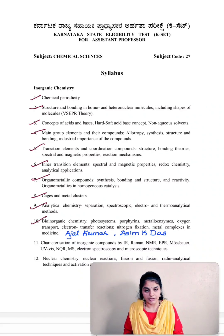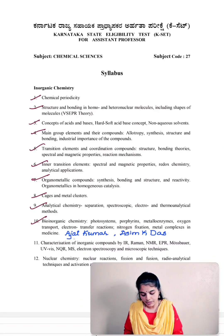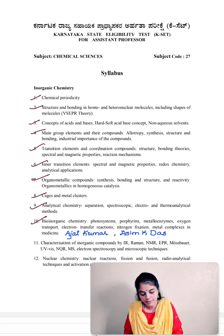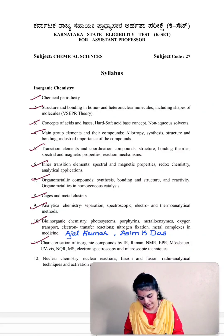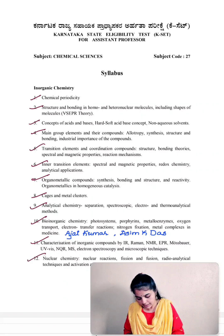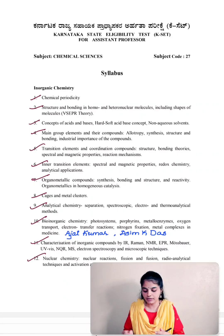We also have bio-inorganic chemistry. The best books for bio-inorganic chemistry are by Ajay Kumar or bio-inorganic chemistry by Asim K. Das. Then we have characterization of inorganic compounds, which covers inorganic spectroscopic techniques, and finally nuclear chemistry.